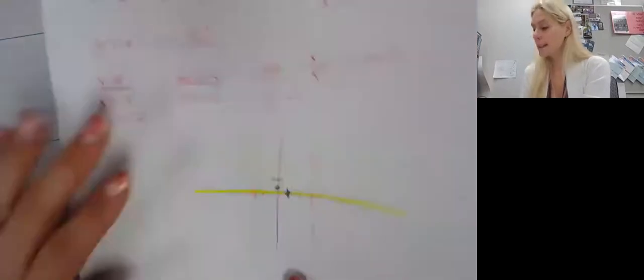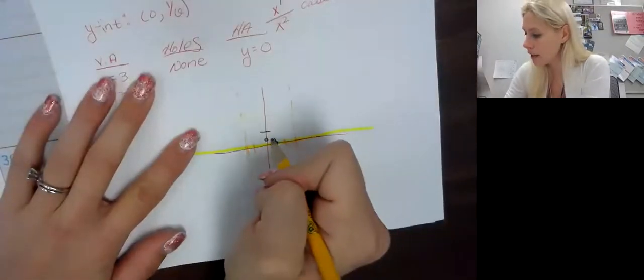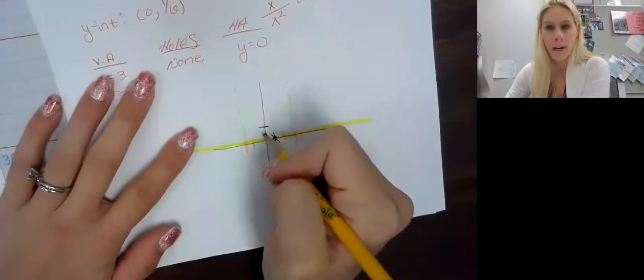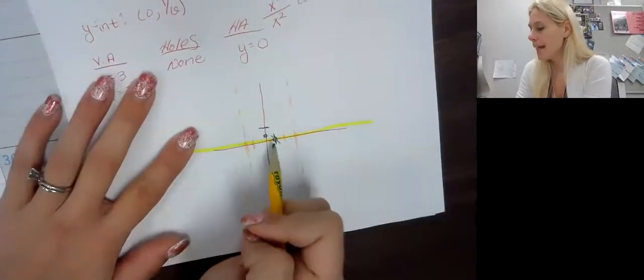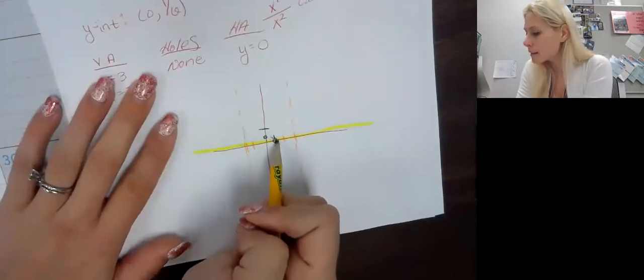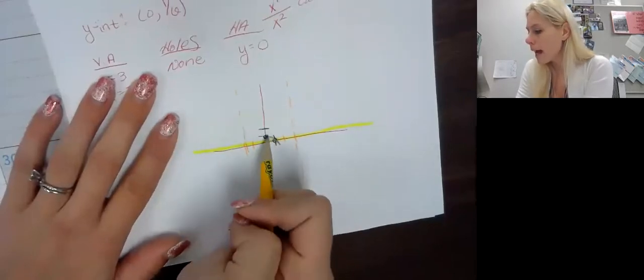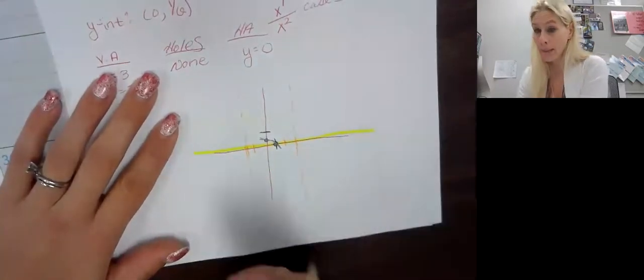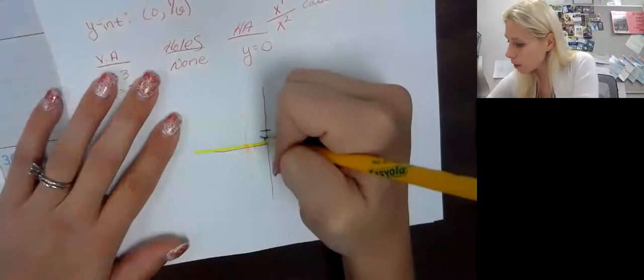As you can see, x minus 1 is to the first. There's no exponent, there's no parentheses with an exponent. It's just to the first, so that means it crosses. So I know right here that we have it could go either way, but of course I see it going decreasing...